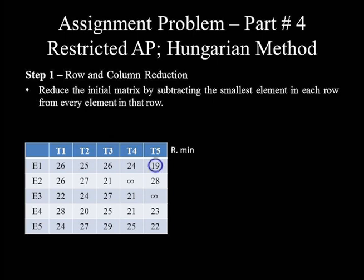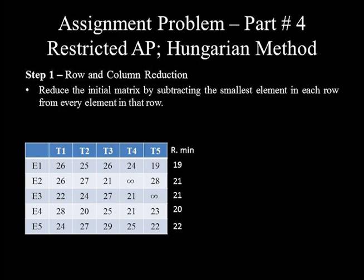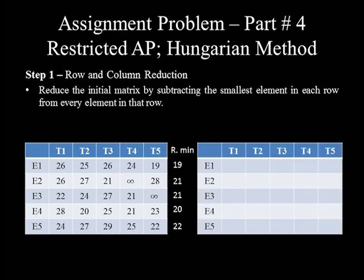Row 1 minimum is 19, row 2 minimum is 21, row 3 minimum is 21 again, row 4 minimum is 20, and row 5 minimum is 22. Let's copy a blank table for the row reduced entries and continue the deduction from row 1: 26 minus 19 equals 7, 25 minus 19 equals 6, 26 minus 19 equals 7, 24 minus 19 equals 5, and 19 minus 19 equals 0.